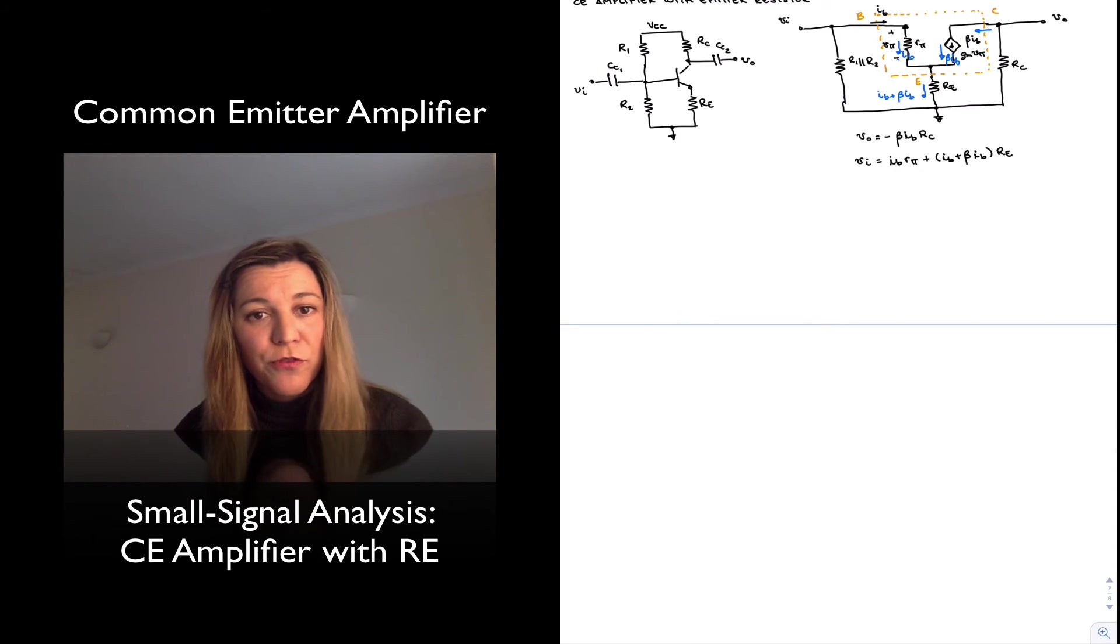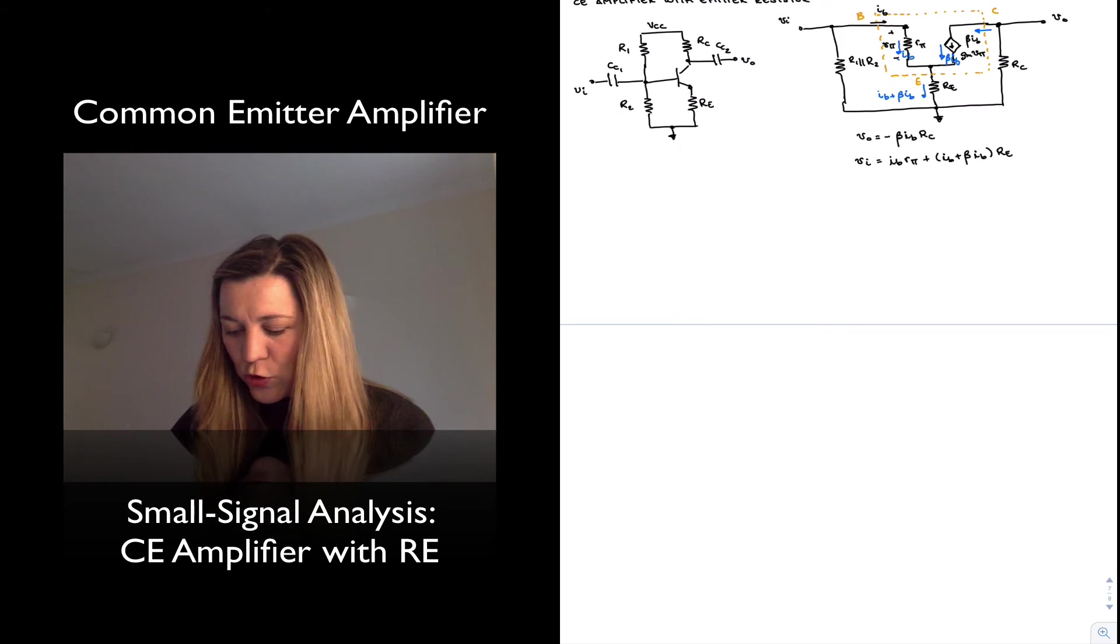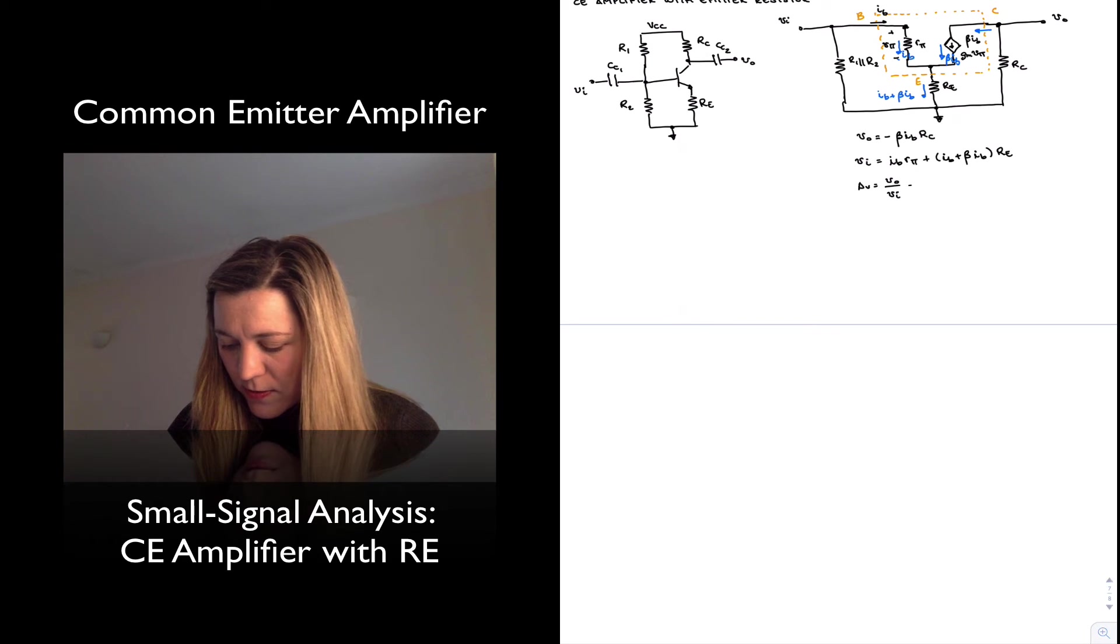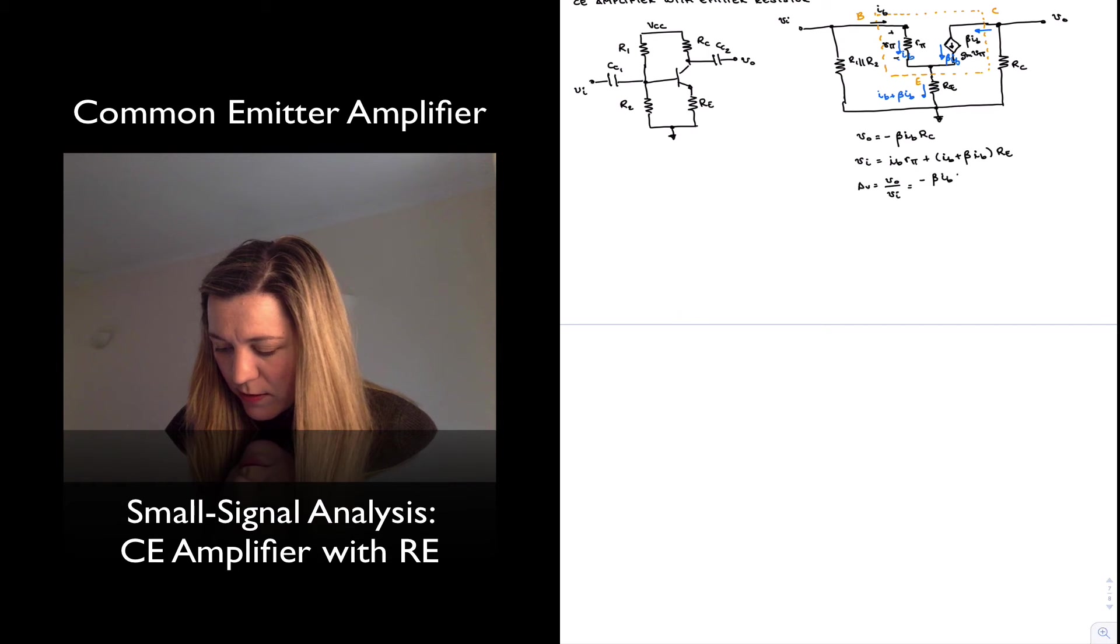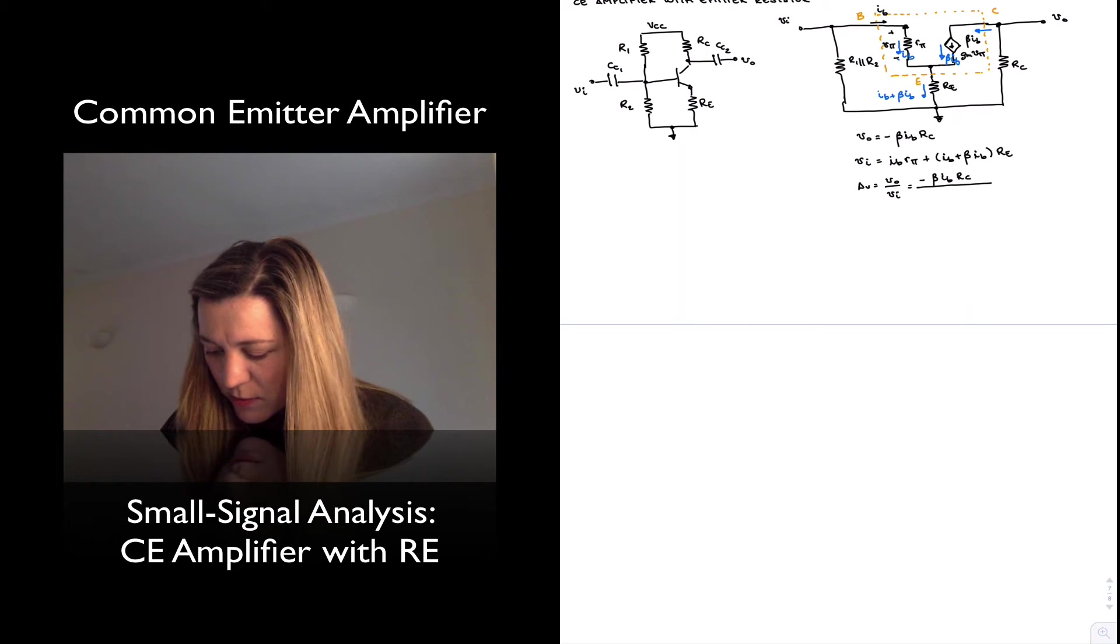All right, so I have an expression for V_out and expression for V_in. The voltage gain is going to be the ratio of the two, so A_v is going to be equal to V_out divided by V_in, or negative beta*I_B times R_C divided by